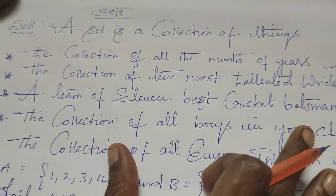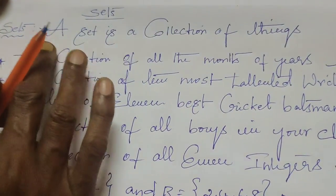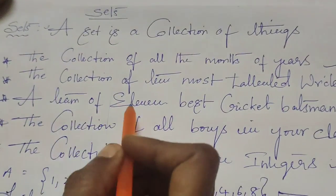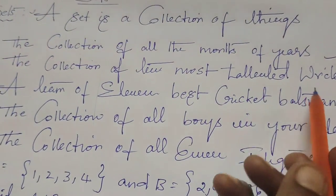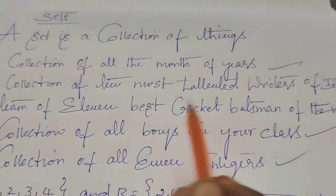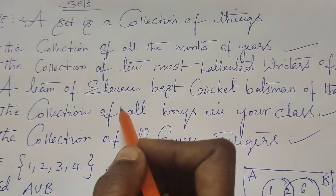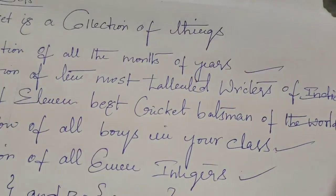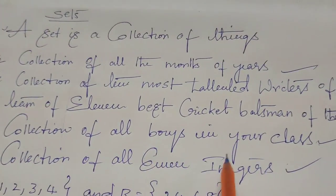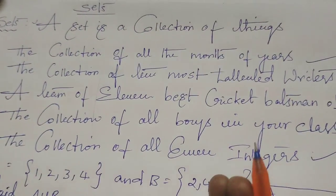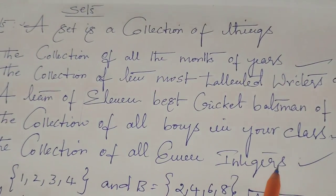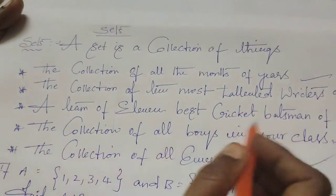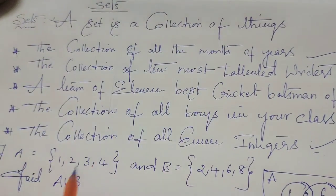These examples are all examples of the definition of a set: the collection of all the months of the year, the collection of the two most talented writers of India, a team of 11 best cricket batsmen of the world, the collection of all boys in your class, and the collection of all even integers.